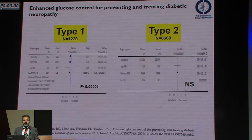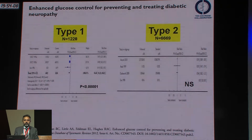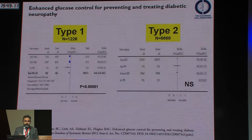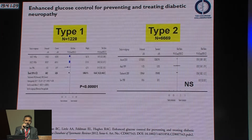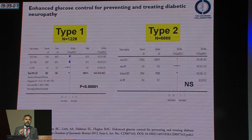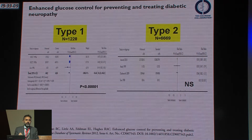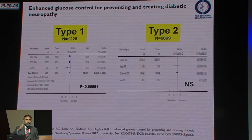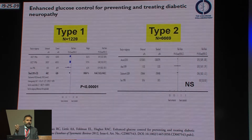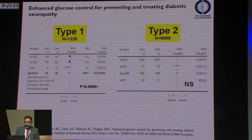In type 1 diabetes, lowering glucose works for neuropathy. In type 2 diabetes, the evidence is that you cannot have a meaningful impact by lowering glucose. That isn't to say you shouldn't try — the reason is that these trials, unfortunately, started improving glucose too late. People already had advanced complications, which are very difficult to reverse.